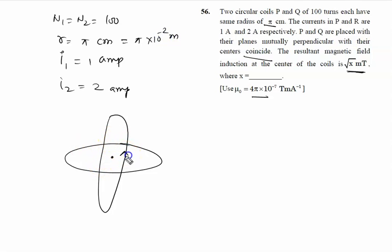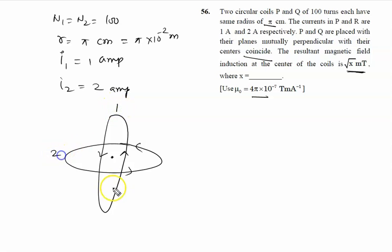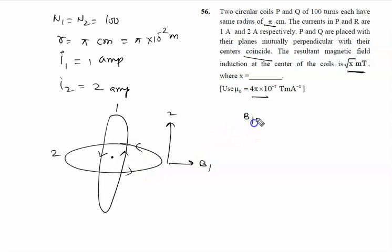Using the current directions for each coil, this gives the direction of the magnetic field due to coil 1 and due to coil 2. Coil 1 corresponds to P and coil 2 corresponds to Q. So if I write the value of B1, it is given by μ₀NI upon 2R.